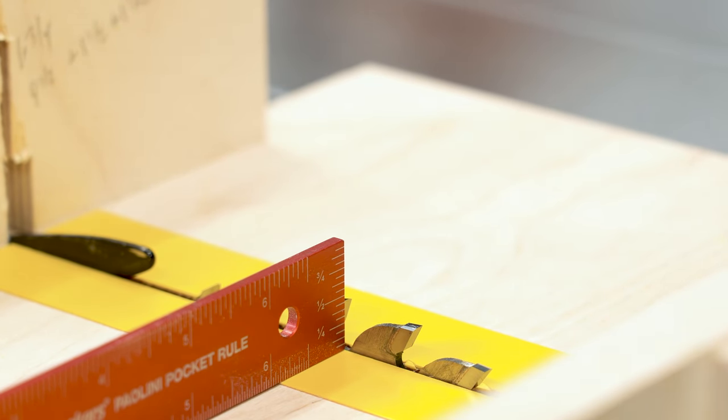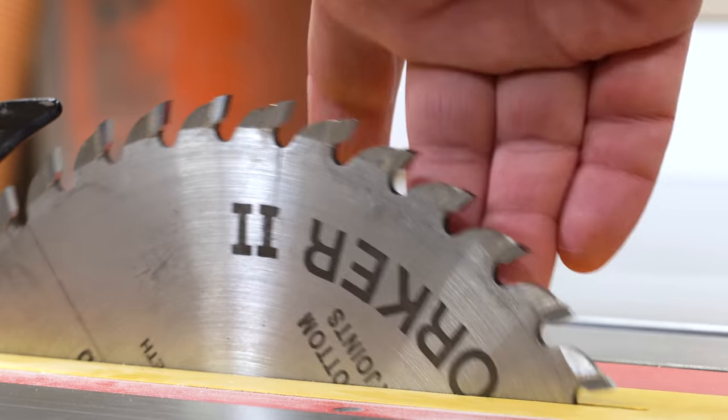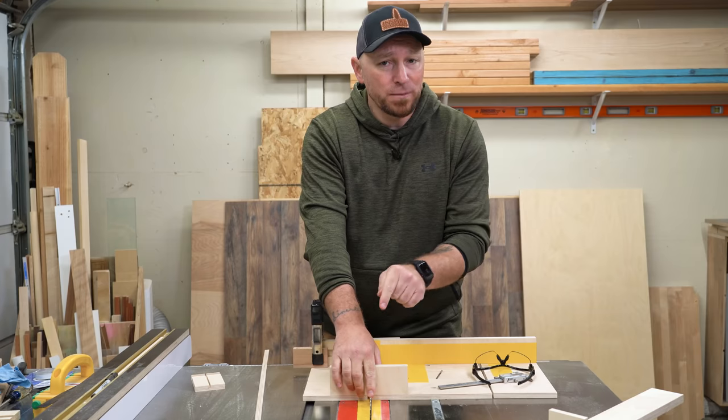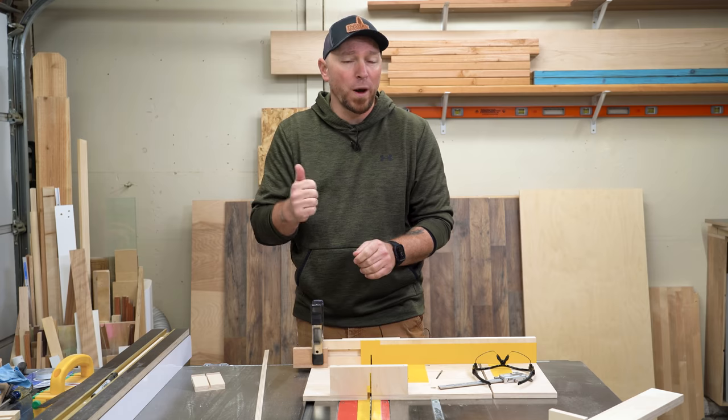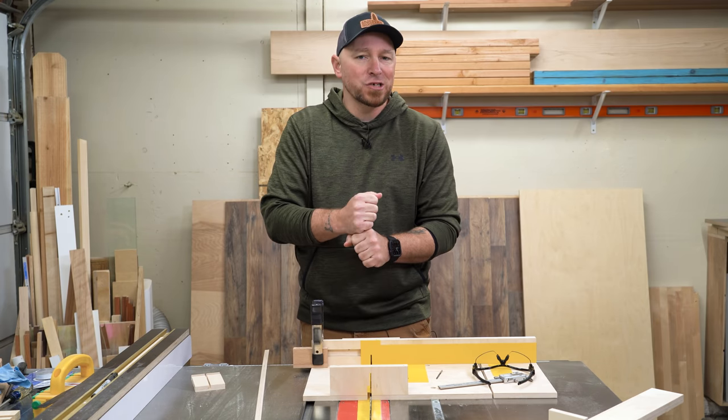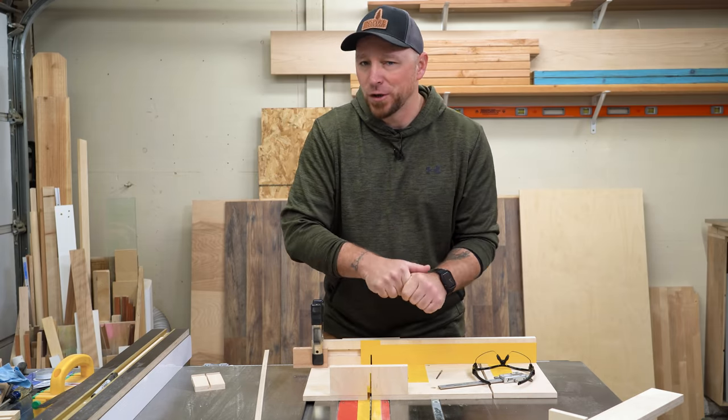My saw blade of choice is going to be the Forrest Woodworker 2 Number 1 grind, which leaves a perfectly flat bottom cut. This is always one of my most recommended saw blades, but a few of you recently have mentioned that the price has gone up quite a bit. I'm going to leave a couple of links to some more cost friendly options in the description.